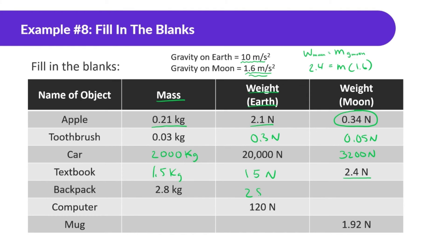For the backpack weight on Earth: multiplying mass by 10 gives 28 newtons. Then 2.8 times 1.6 gives 4.48 newtons on the moon. For the computer, dividing by 10 gives a mass of 12 kilograms. Then 12 times 1.6 gives 19.2 newtons on the moon. For the mug, I'm doing 1.92 divided by 1.6 — the same procedure as the textbook — and I get that the mug has a mass of 1.2 kilograms, so the weight on Earth is going to be 12 newtons.